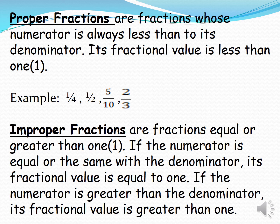Proper fractions are fractions where the numerator is always less than the denominator. Its fractional value is less than one. Examples: one-fourth, one-half, five-tenths, two-thirds.